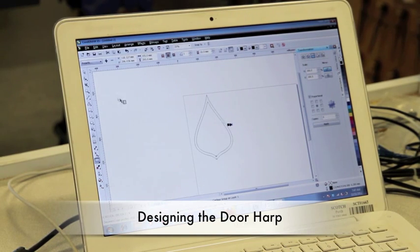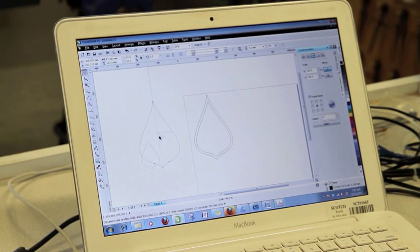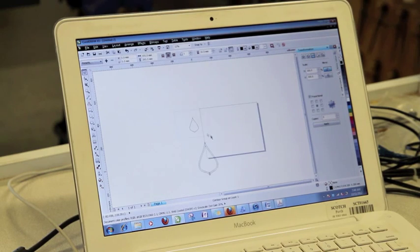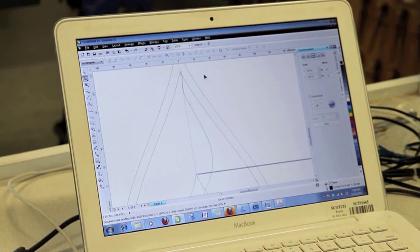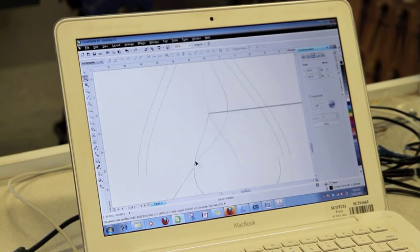The first thing you need to do when creating your door harp is to design it. I've used Corel Draw for this process. You have to draw the overall outline of your door harp, as well as whatever pattern you want to have for the veneers and the sound hole.